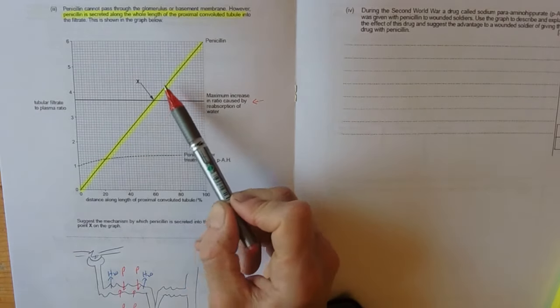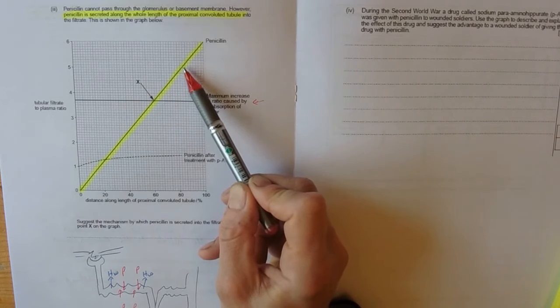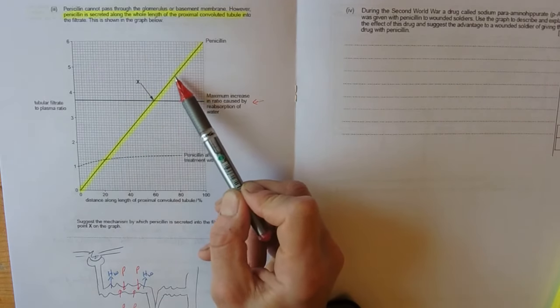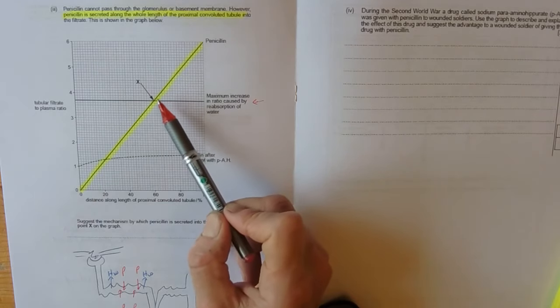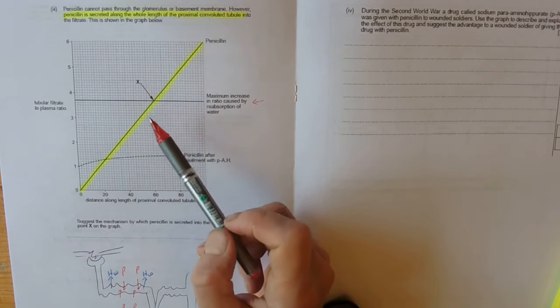But even if we did all those calculations and so on, this penicillin here, the level of it, the concentration of it is too high to be accounted for by diffusion or water moving.